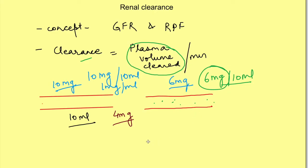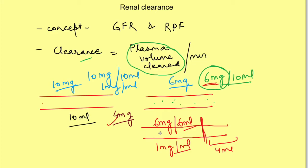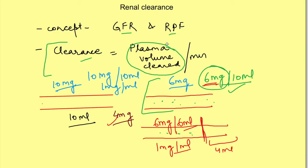So instead of looking at it that way, we can say that this 6 mg which is left — because 4 mg has been excreted — is present in actually 6 ml of plasma, so the concentration will still be 1 mg per ml, and this 4 ml of plasma is now completely cleared. This is just another way of looking at it: the concentration of the substance has decreased, so in 10 ml only 6 mg is present. If we determine the clearance rate of substances, we can use that to determine GFR and renal plasma flow.